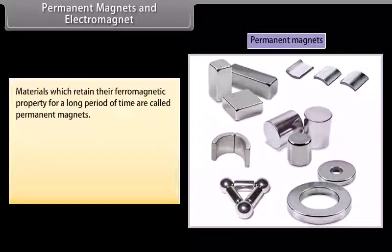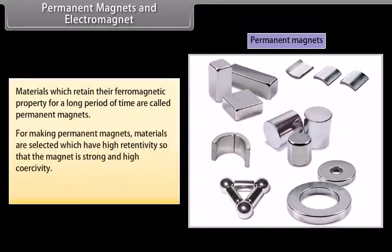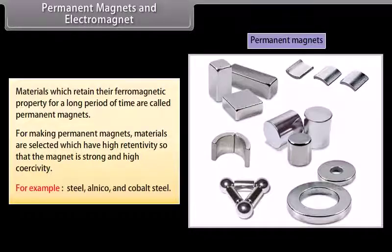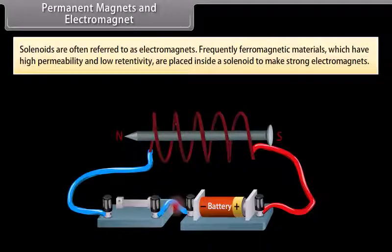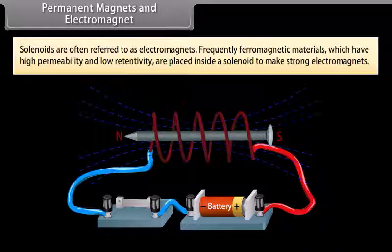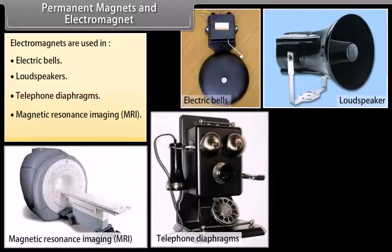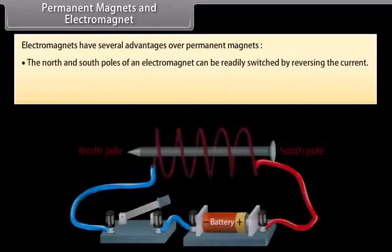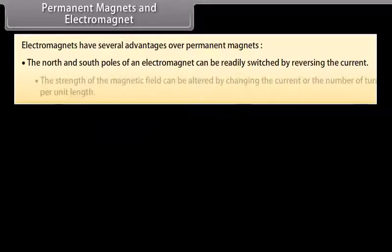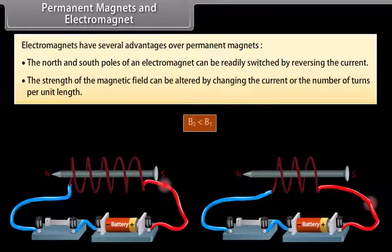Permanent magnets and electromagnets: Materials which retain their ferromagnetic property for a long period of time are called permanent magnets. For making permanent magnets, materials with high retentivity and high coercivity are selected, for example steel, alnico, and cobalt steel. Solenoids are often referred to as electromagnets. Ferromagnetic materials with high permeability and low retentivity are placed inside a solenoid to make strong electromagnets. Electromagnets are used in electric bells, loudspeakers, telephone diaphragms, magnetic resonance imaging (MRI), and cranes to lift heavy materials. Electromagnets have advantages over permanent magnets: the north and south poles can be readily switched by reversing the current, and the strength of the magnetic field can be altered by changing the current or the number of turns per unit length.